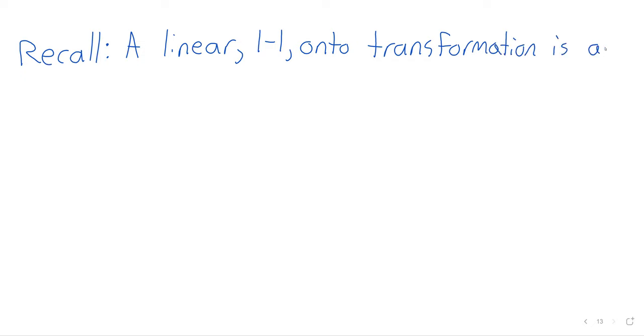Let's just recall some definitions. A linear one-to-one onto transformation is an isomorphism.